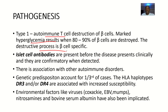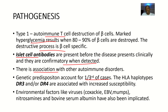The destruction is specifically targeting the beta cells. Islet cell antibodies are present before the disease presents clinically and are confirmatory when detected. There is also association with other autoimmune disorders. Genetic predisposition accounts for about one third of cases — beta cell destruction is linked to genetics. Human leukocyte antigen haplotypes DR3 and DR4 are associated with increased susceptibility, making it easier to develop this disease condition.